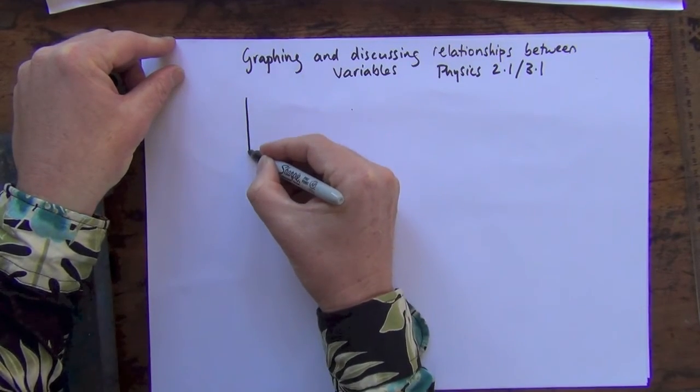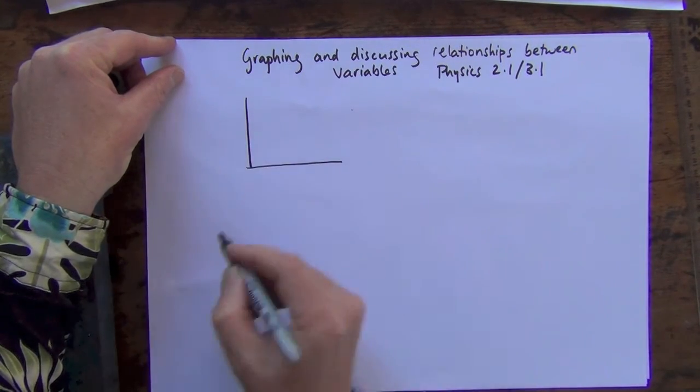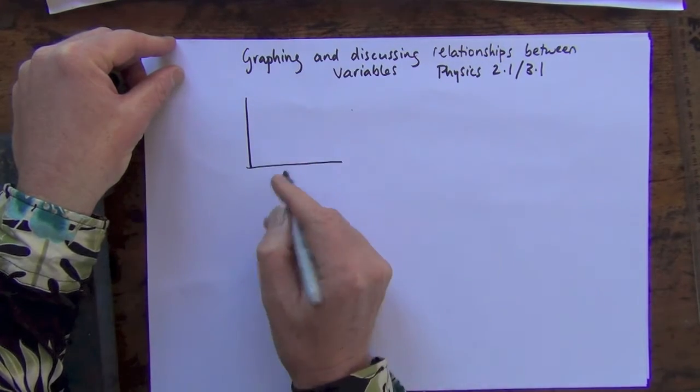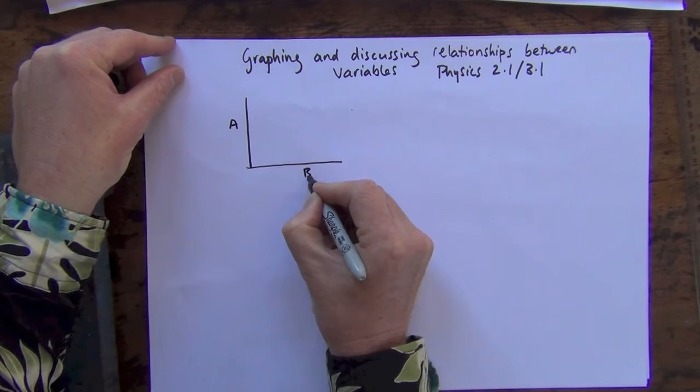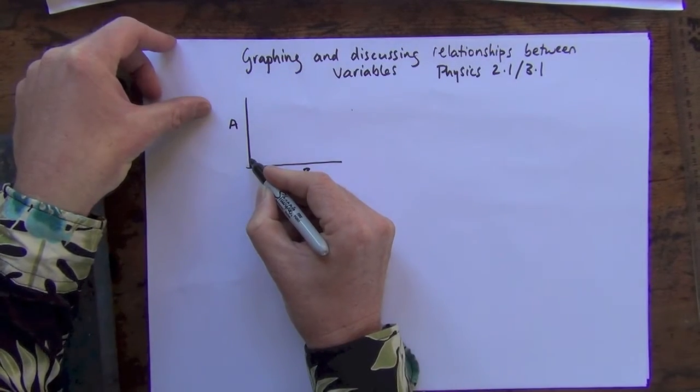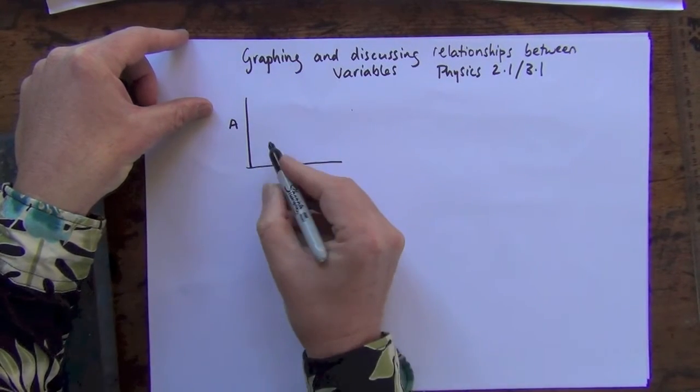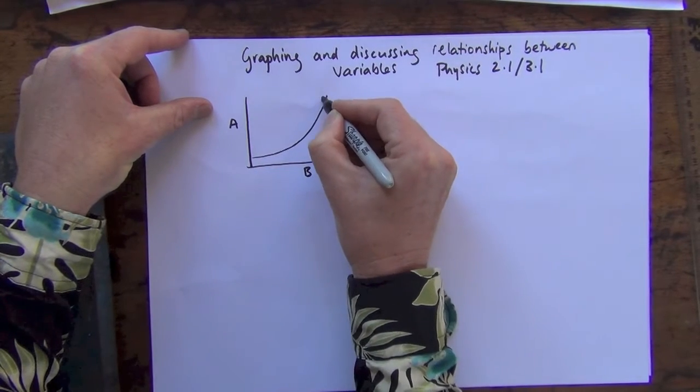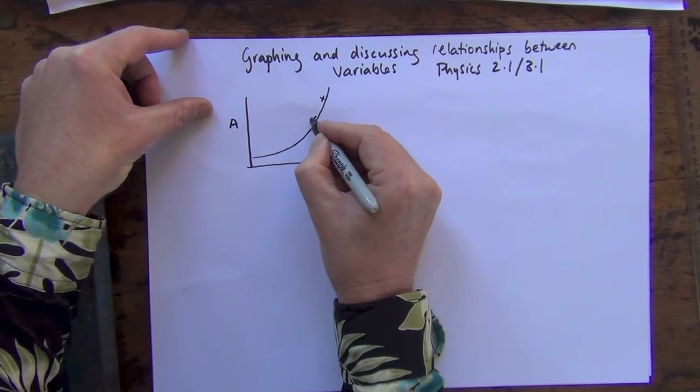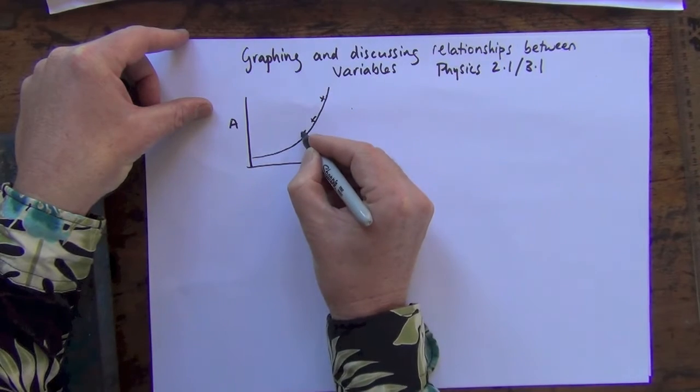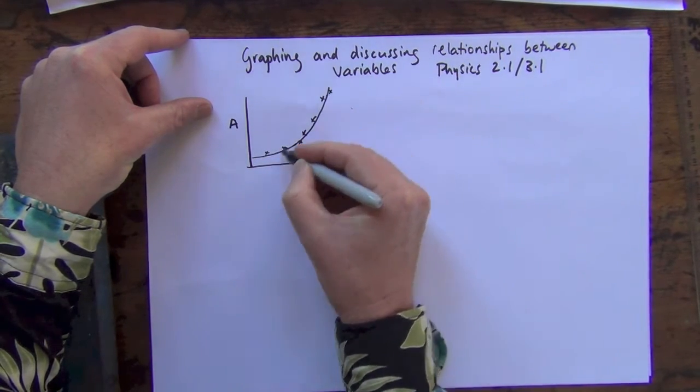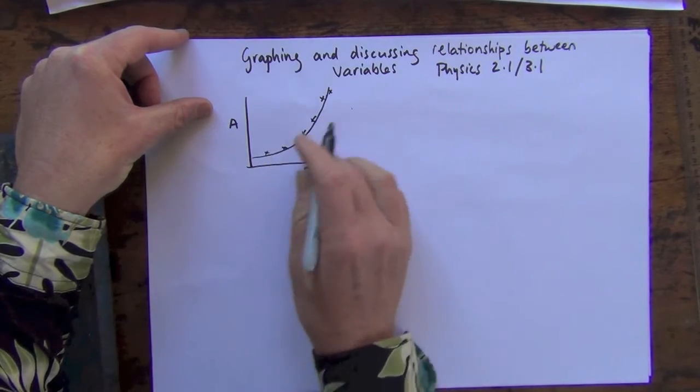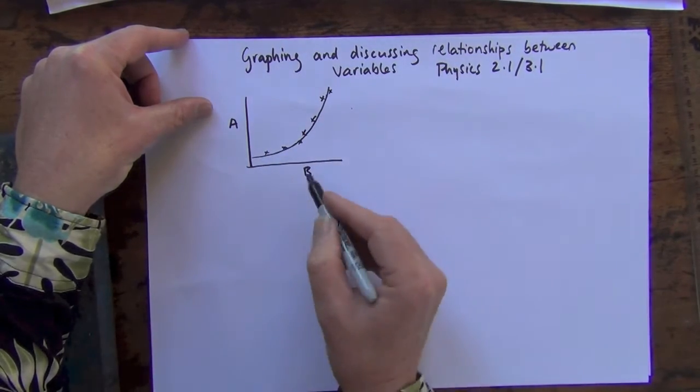So the first graph that we could look at, if we're plotting, say for instance, I took two variables, say I called them A and B, and I plotted those two variables, and the graph looked like this. It swung up quite steeply, started off a little bit flat, and I got some of those points, and I saw a graph going up like that.